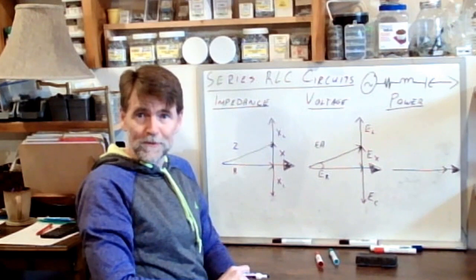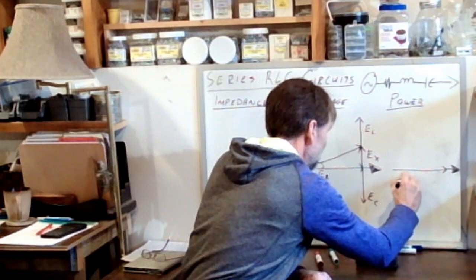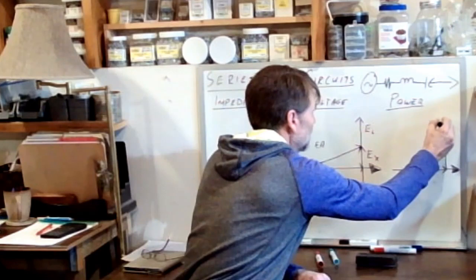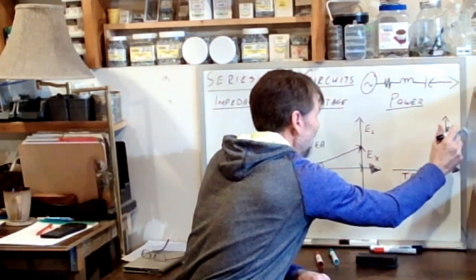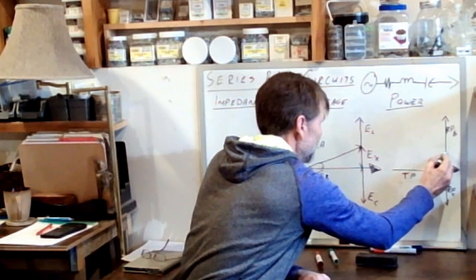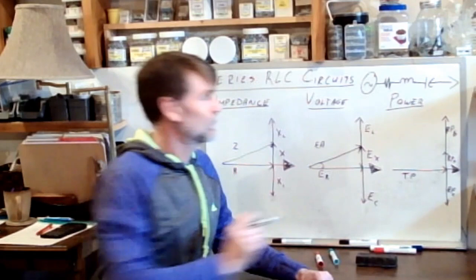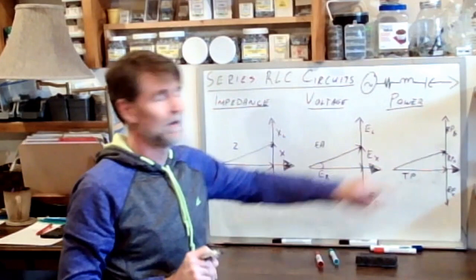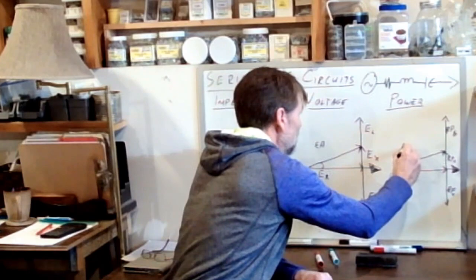One more time. What kind of power is that? In phase with the current, that is our true power, TP. This is RPL. That's RPC, and this, we'll call it RPX. Which allows us one more time to draw the hypotenuse, and in our power triangle, what kind of power is that? That is the apparent power.